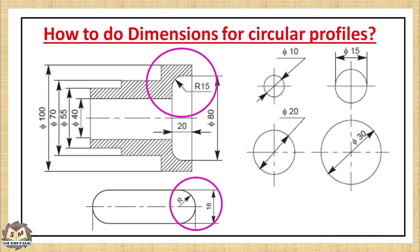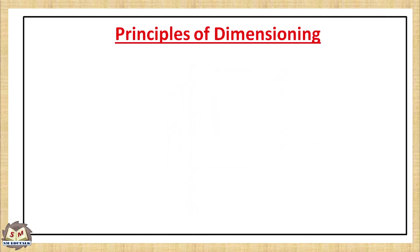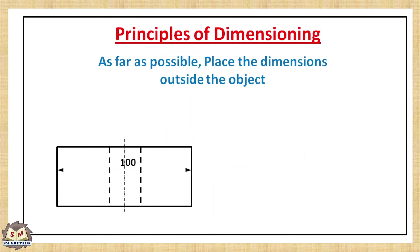Let us see some important principles of dimensioning. As far as possible, place the dimensions outside the object. In this diagram the length of the object is dimensioning inside the object. So as per the principle this is wrong. So to correct this, take the dimension line outside the object. So the second one is correct.